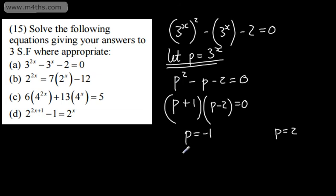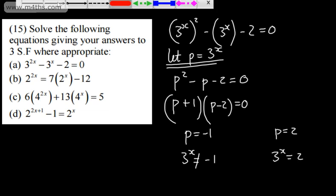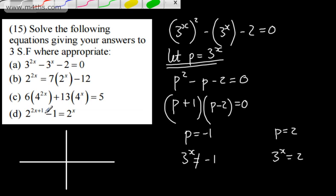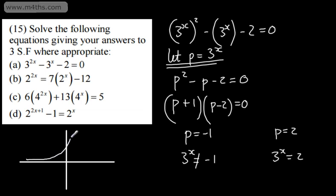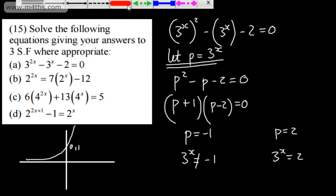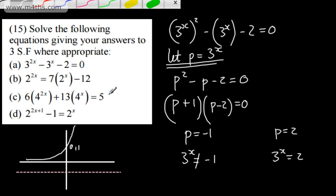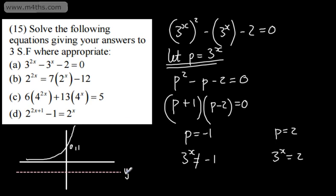Making the substitution back, we can say 3 to the x is equal to negative 1. Now 3 to the x can never be equal to negative 1. Or 3 to the x is equal to positive 2, and that will work. This is saying: what power of 3 will give us negative 1? The answer is there's no real power that will work for that. If we look at 3 to the x as the exponential curve, it's asking where it crosses the line y equals negative 1, and the answer is nowhere. So there are no real solutions to that equation.